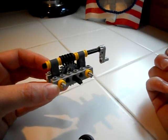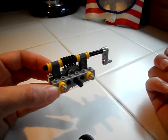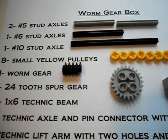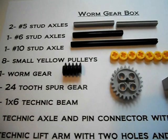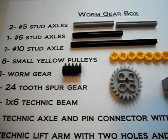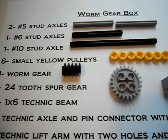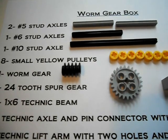So, let's start at the very beginning with the parts and how to assemble. Okay, let's take a look at our materials list for making a worm gearbox. We need two No. 5 stud axles, we need one No. 6 stud axle, one No. 10 stud axle.